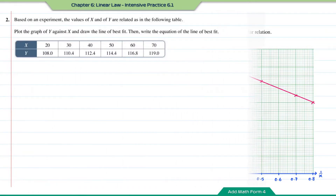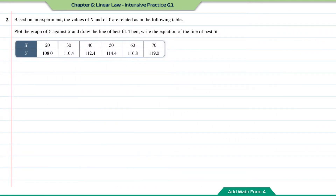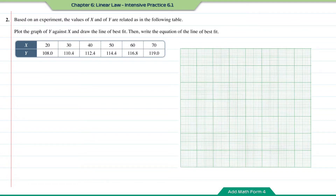Question number two: based on an experiment, the values of x and y are related as in the following table. Plot the graph of y against x and draw the line of best fit, then write the equation of the line of best fit. Based on the data, for the x-axis I'm going to use 2 cm to 10 units.